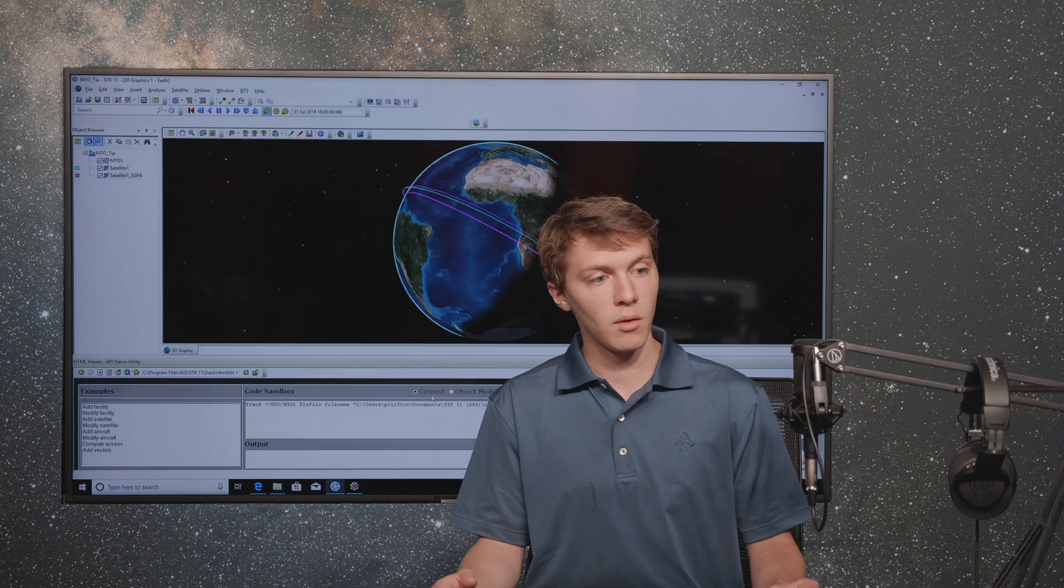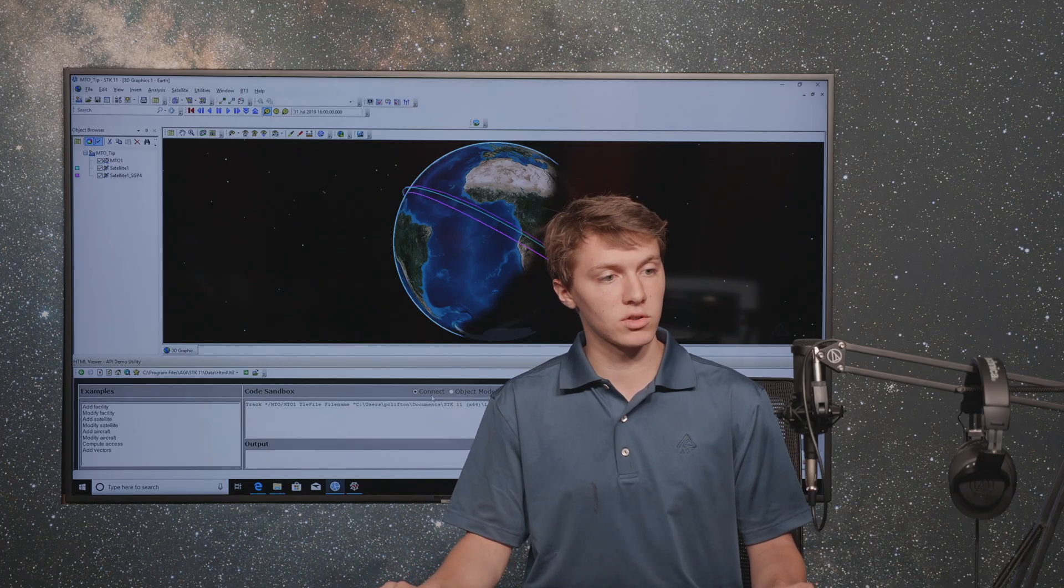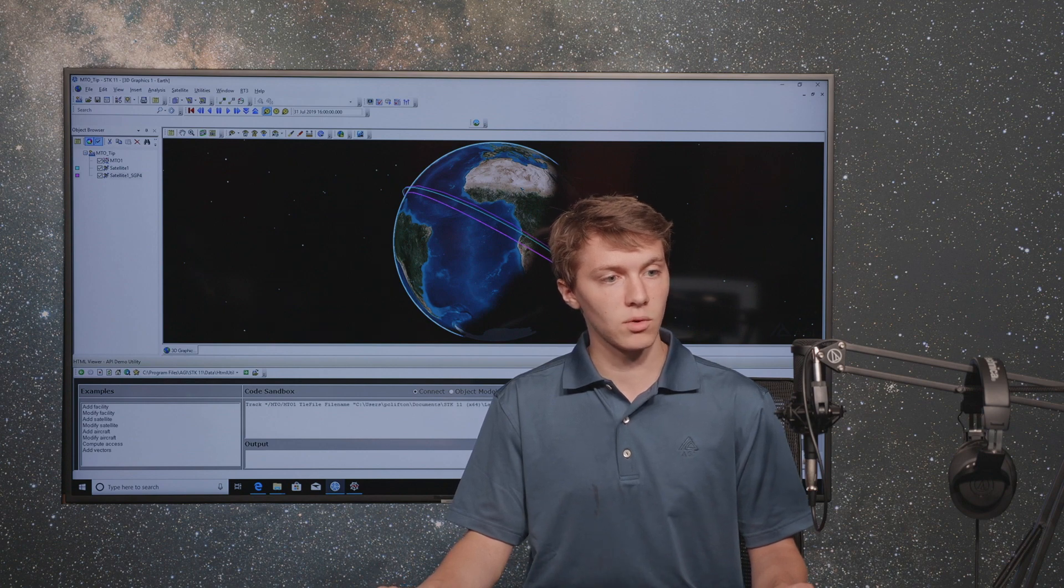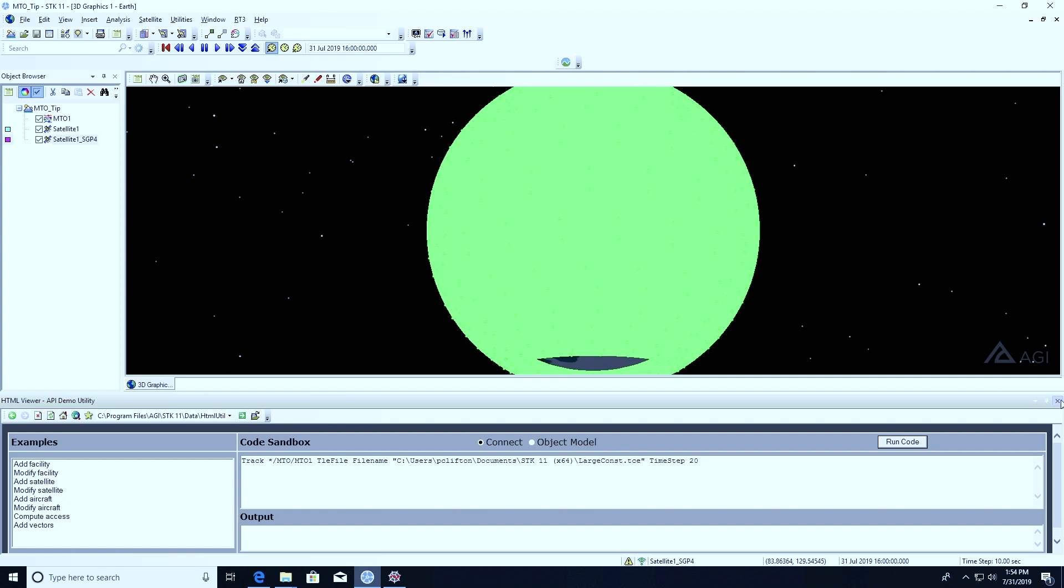This says step through every 20 seconds and propagate the TLEs based on that interval. The smaller time step you do, the better animation, the more fluid it's going to look like your satellites are actually moving the way they're supposed to. But it also takes SDK a little bit longer to load that in. I think 20 is a good one for us, so we're going to hit run code. Then I'm going to close out the connect command browser, so we don't need that anymore.